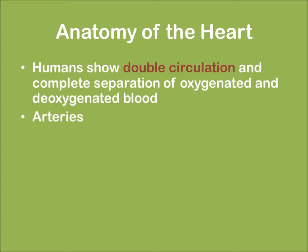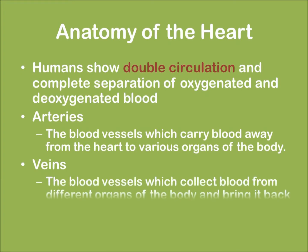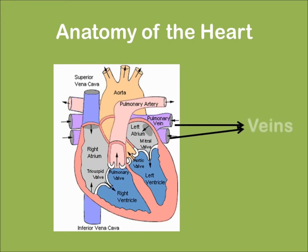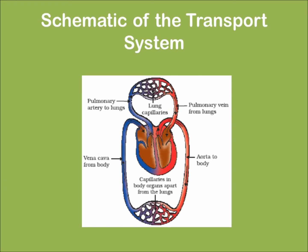Humans show double circulation and complete separation of oxygenated and deoxygenated blood. The blood vessels which carry blood away from the heart to various organs of the body are known as arteries. The blood vessels which collect blood from different organs and bring it back to the heart are called veins. Note that arteries carry pure blood and veins carry impure blood.